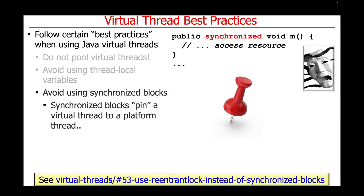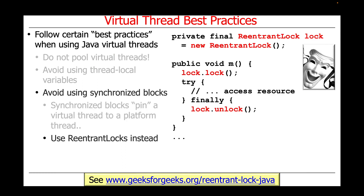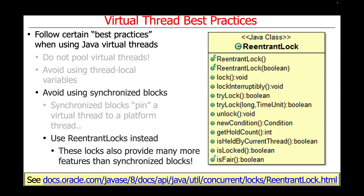The next best practice to consider is to avoid the use of synchronized blocks. Synchronized blocks have been around in Java since the very beginning, and they make it straightforward to provide a critical section where only one thread at a time can access some shared resource. However, synchronized blocks pin a virtual thread to a platform thread, so you should avoid their use whenever possible if you plan to use virtual threads extensively. Instead, use Java reentrant locks. There is more ceremony involved — for example, you need to use try-finally blocks to unlock the lock regardless of what happens in the block of code that accesses the shared resource.